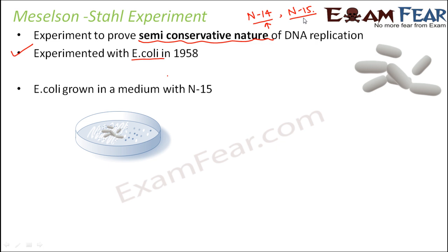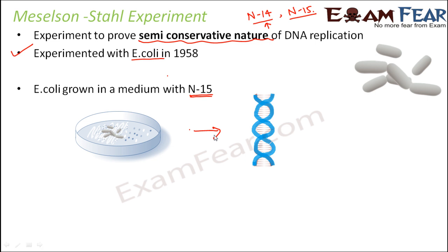Nitrogen is a major constituent of DNA, so if the Nitrogen isotope is replaced, the DNA will have changes. For example, if the Nitrogen is radioactive, the DNA will become radioactive; if it is non-radioactive, the DNA will be non-radioactive. Now, if the Nitrogen contains the Nitrogen-15 isotope, the DNA will have the property of Nitrogen-15. It has been observed that DNA with Nitrogen-15 is heavier than DNA with Nitrogen-14. So the E. coli grown in a Nitrogen-15 medium will have heavier DNA.